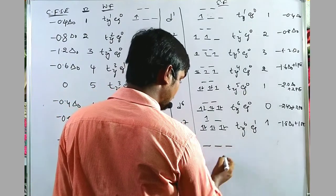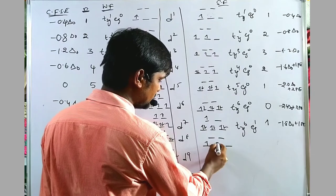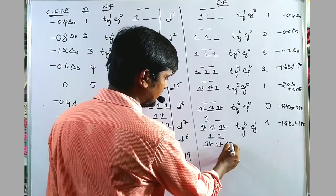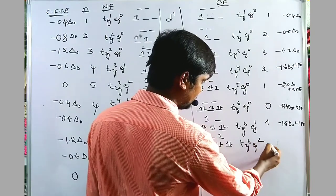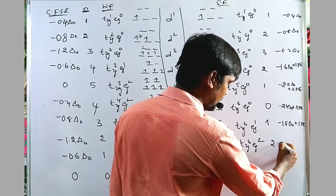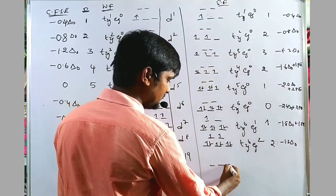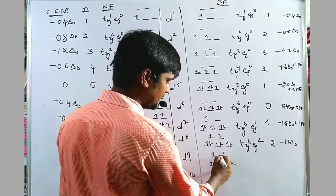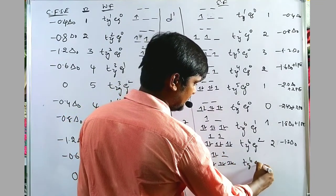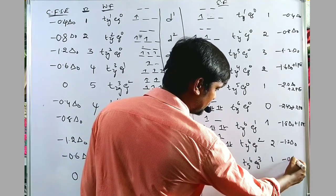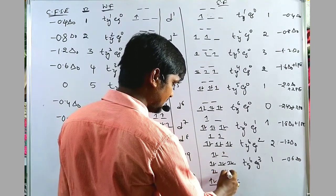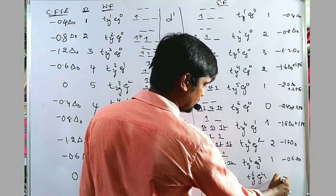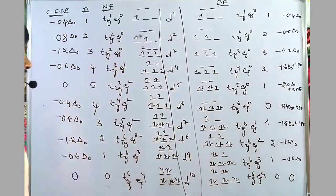For D8 strong field: configuration T2G⁶EG², 2 unpaired electrons, CFSE = minus 1.2 ΔO. For D9 strong field: T2G⁶EG³, 1 unpaired electron, CFSE = minus 0.6 ΔO. For D10 strong field: T2G⁶EG⁴, no unpaired electrons, CFSE = 0. This completes the table of weak field and strong field CFSE values for octahedral complexes.